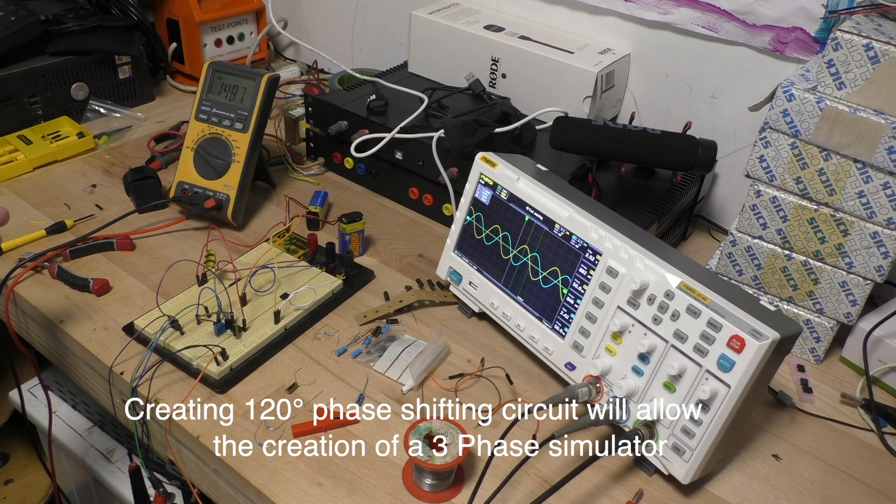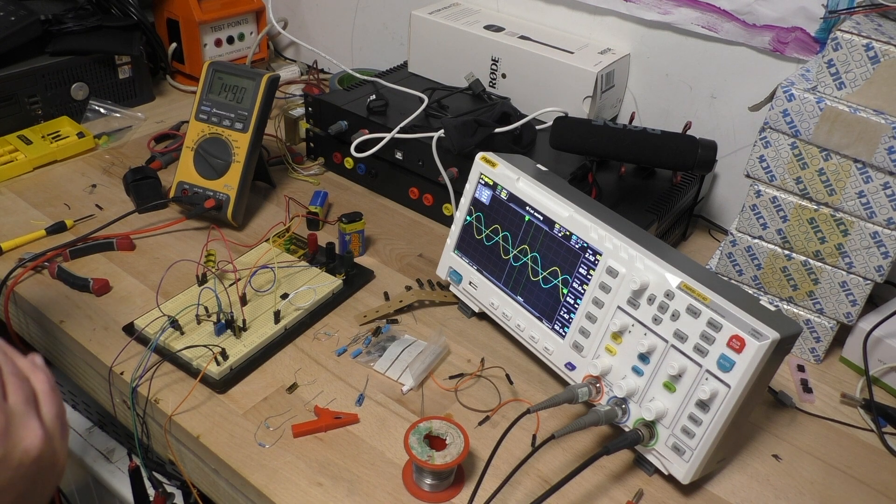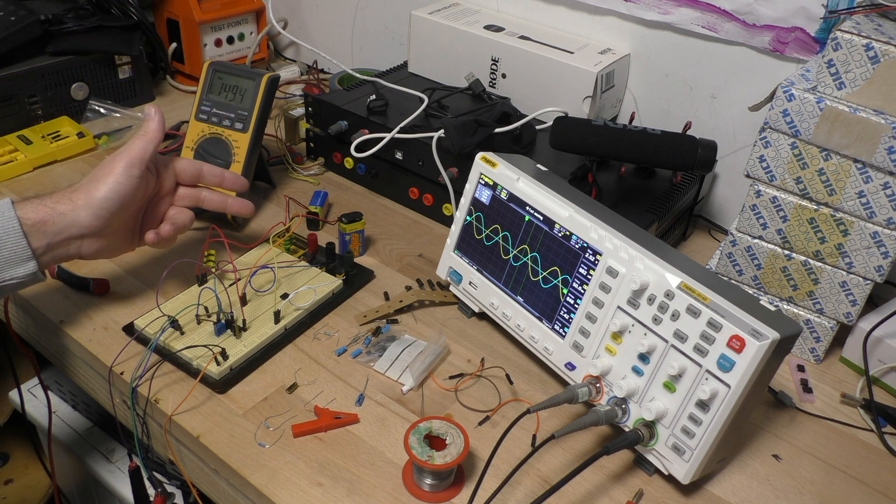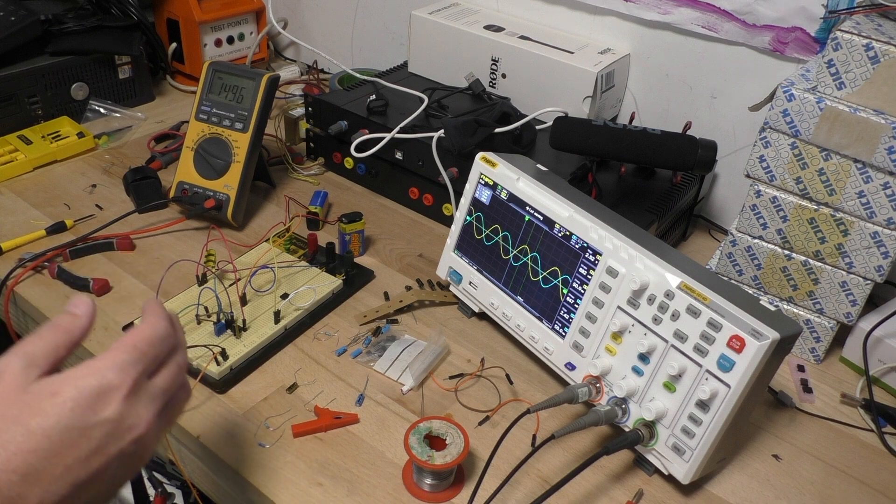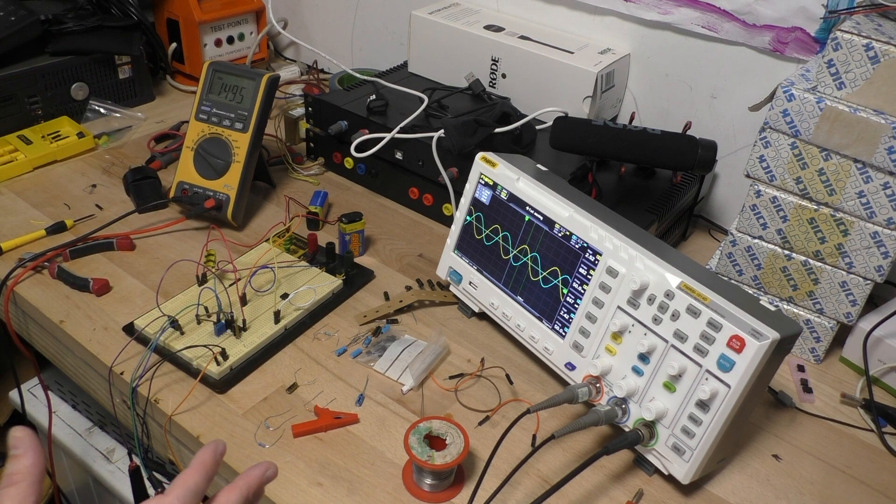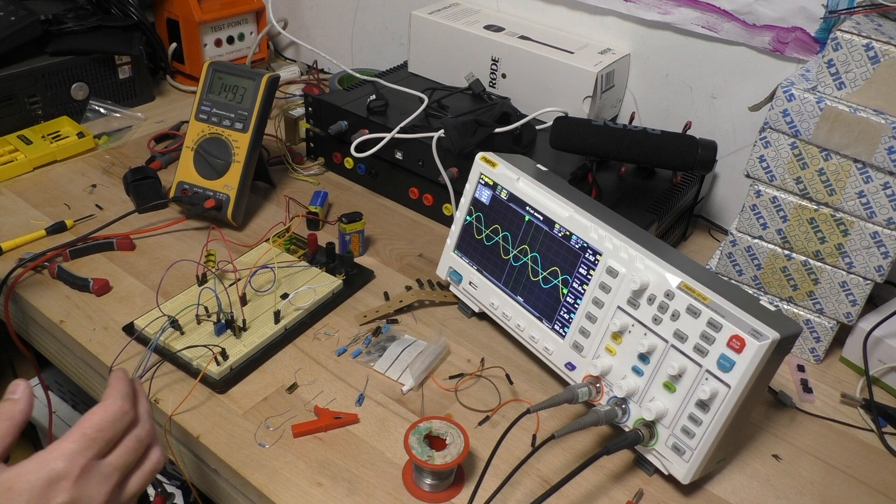Now what I've done is I've removed the center tap transformer that I used to give me a positive and negative rail, and just replaced it with a couple of batteries because I've worked out that was the problem with the dirty sine wave, so I've cleaned that up.